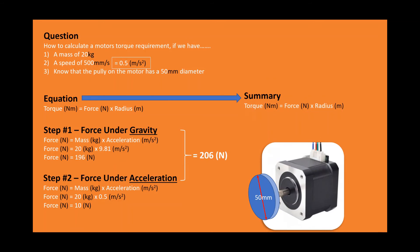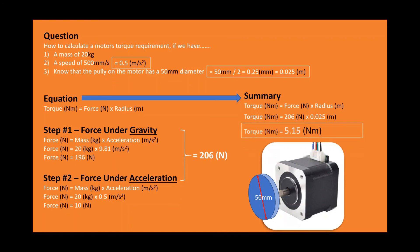We now have all the elements to work out the torque requirement for this motor. First, we need the radius in meters — at the moment it's in millimeters. The diameter of the pulley is 50 millimeters, which converts to 0.025 meters. The torque is 206 newtons times the pulley radius, giving a final torque of 5.15 newton meters.